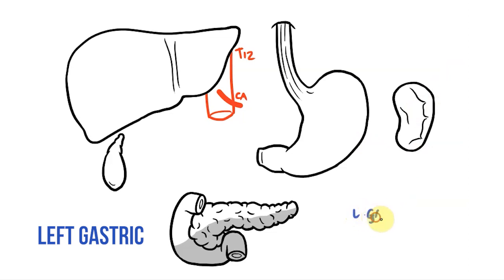First we have the left gastric artery. As the name suggests, this will head towards the left side of the stomach, supplying this part of the lesser curvature. It also sends esophageal branches to the esophagus. And that's it, the first branch done.